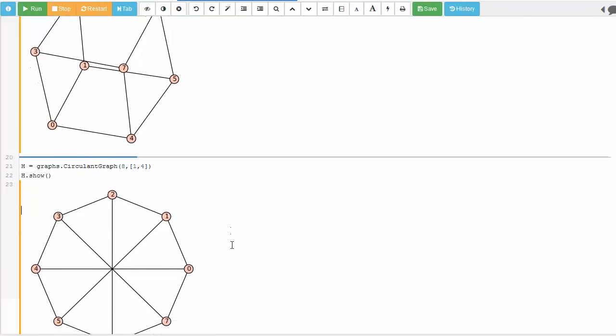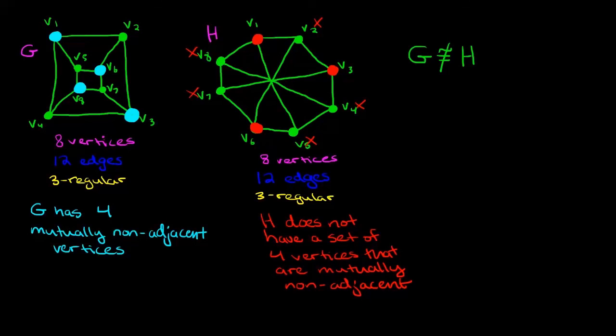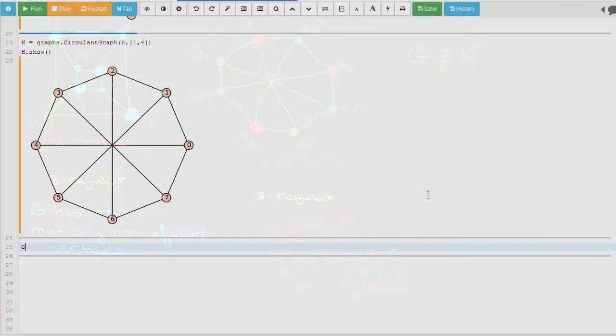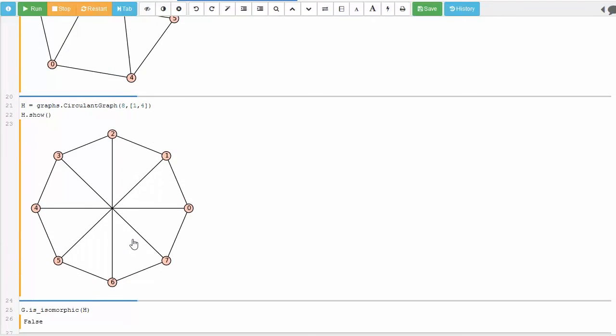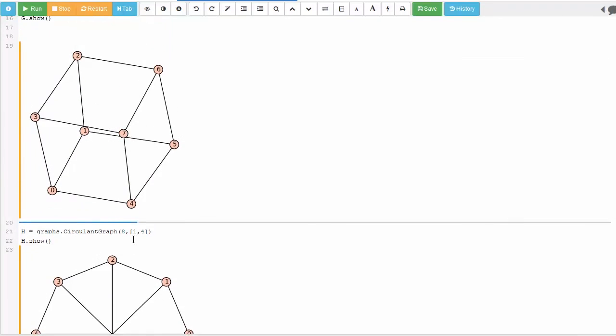Now we have these two graphs on eight vertices. These are the ones that we showed were not isomorphic. So let's see what SAGE tells us. We'll do G dot is isomorphic to H. And lo and behold, SAGE tells you that it's false. So we've used SAGE to prove exactly what we've already proved in video number 10.